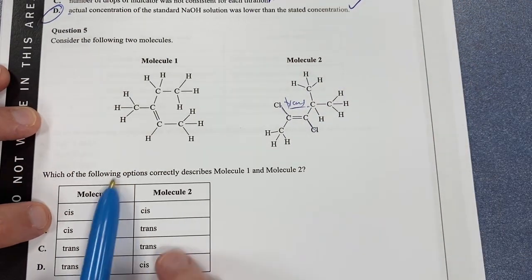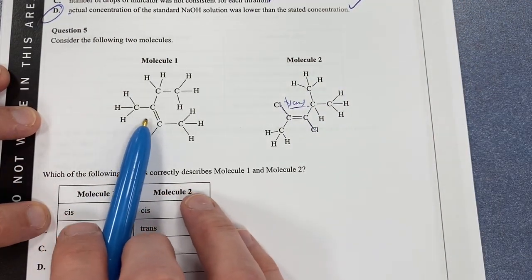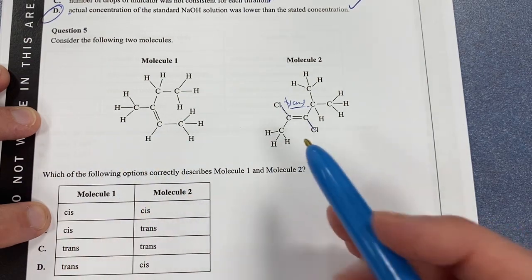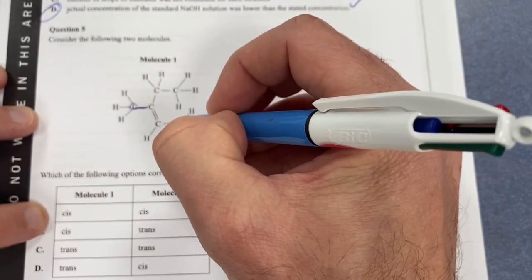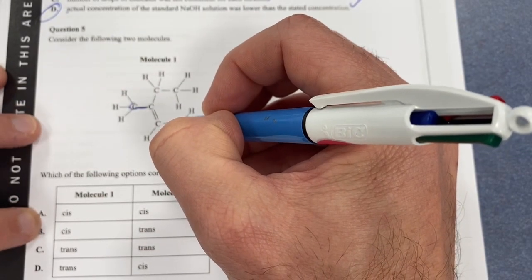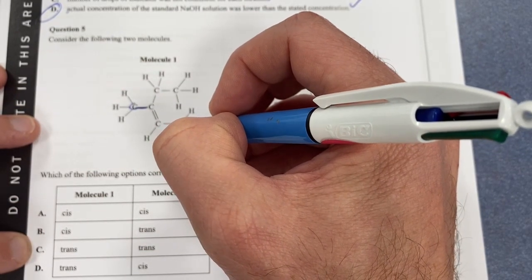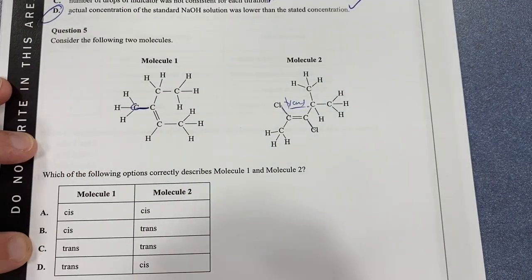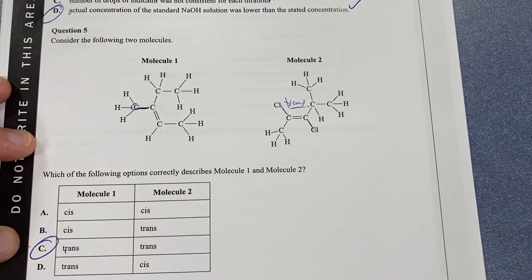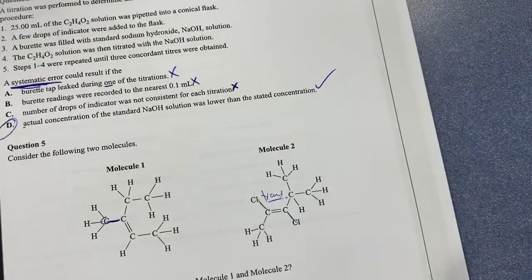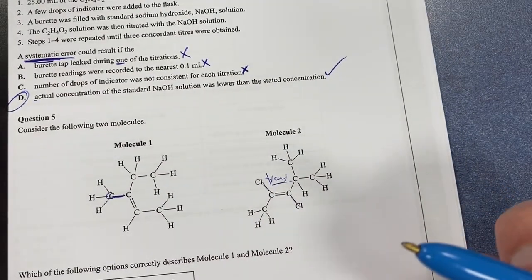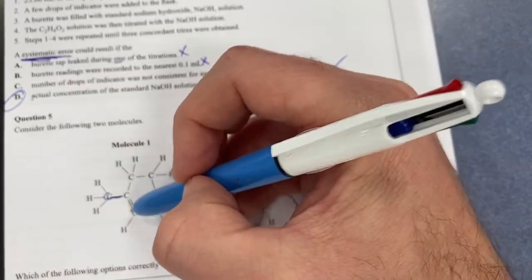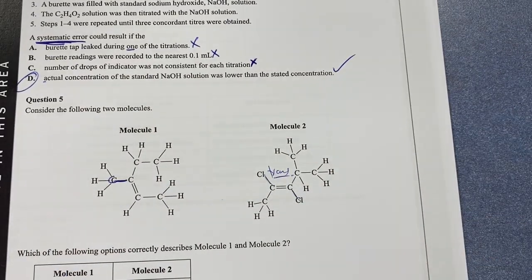And then here, what have we got? We've got molecule 1 is going to be - well, you can see the CH3s on this side and CH3s on that side. That suggests that it's probably going to be trans as well. So therefore, we're going to go with C. So they're both going to be trans molecules. You can see that trans means the similar functional groups are on the different side of our carbon-carbon double bonds. So therefore, question 5 is C, both trans.